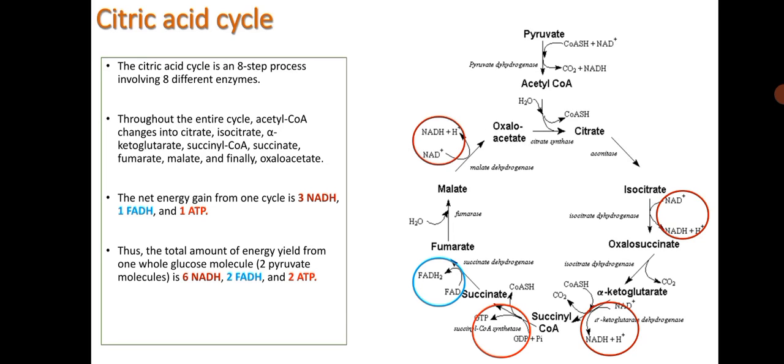The citric acid cycle is an eight-step process involving eight different enzymes. Throughout the entire cycle, acetyl-CoA changes into citrate, then isocitrate, then alpha-ketoglutarate, then succinyl-CoA, then succinate, fumarate, malate, and finally oxaloacetate.